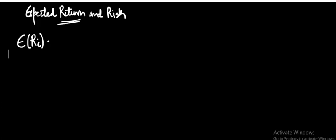Having discussed the measurement of historical risk and return, we now move on to the measurement of expected return and risk. First, let us discuss how to calculate the expected return on a security or investment. The expected return on an investment is defined as the summation of all the returns from 1 to n, each multiplied by its respective probability.